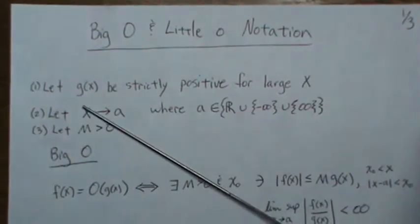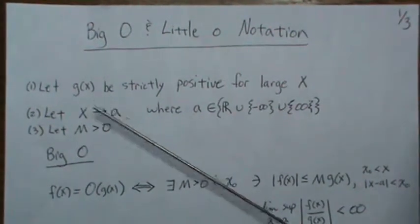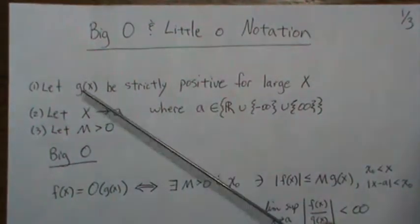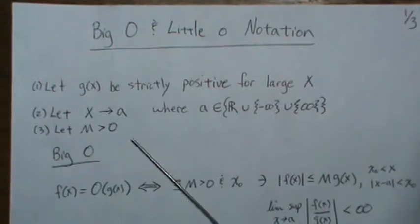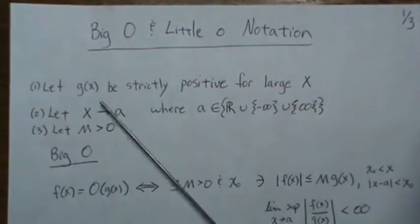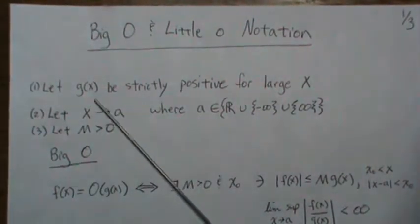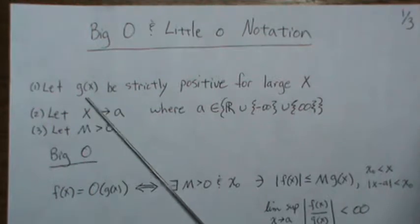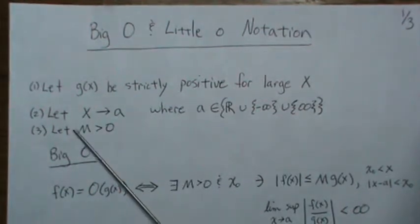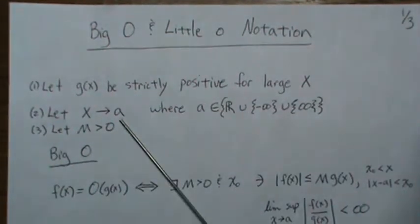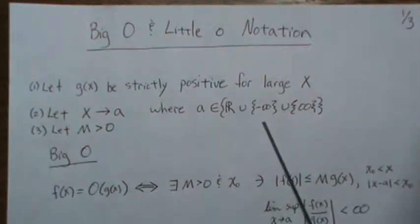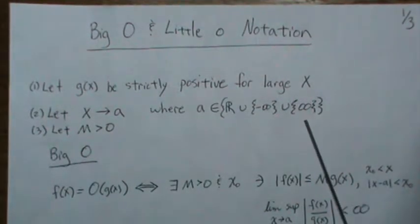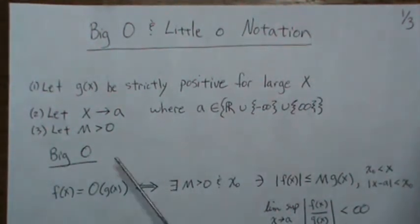Before we start, we're going to let g(x) be a positive function, and that's positive for large x. We're going to let x converge to some value a, but a can be a real number or negative or positive infinity, and m has to be a positive number.